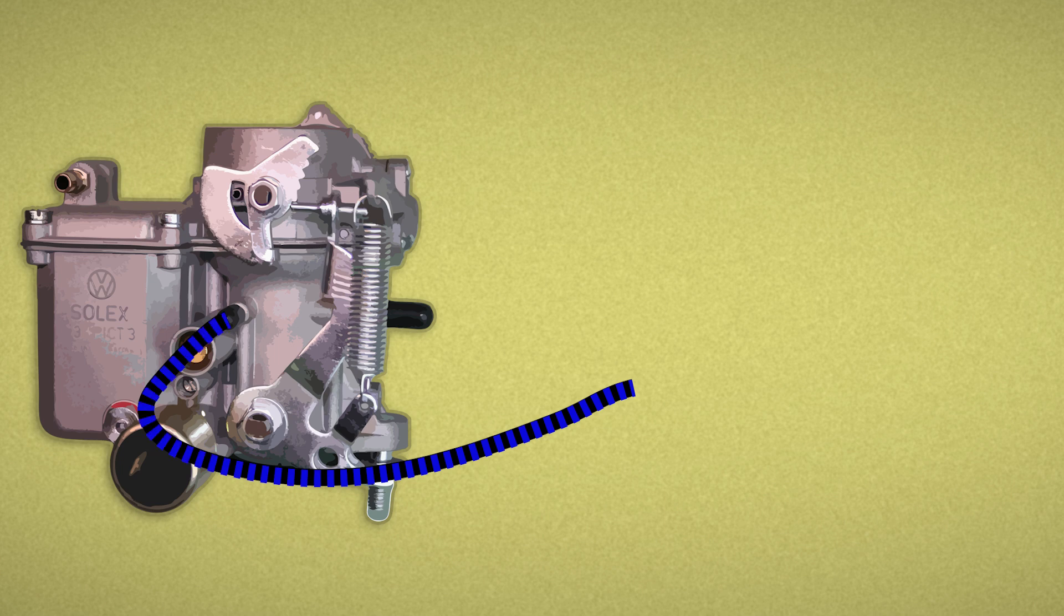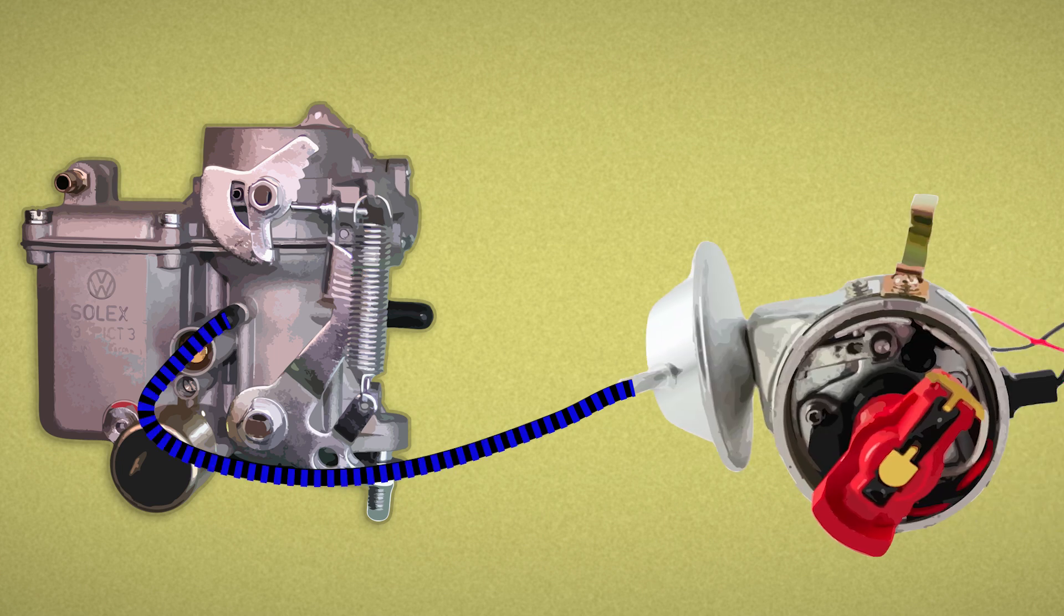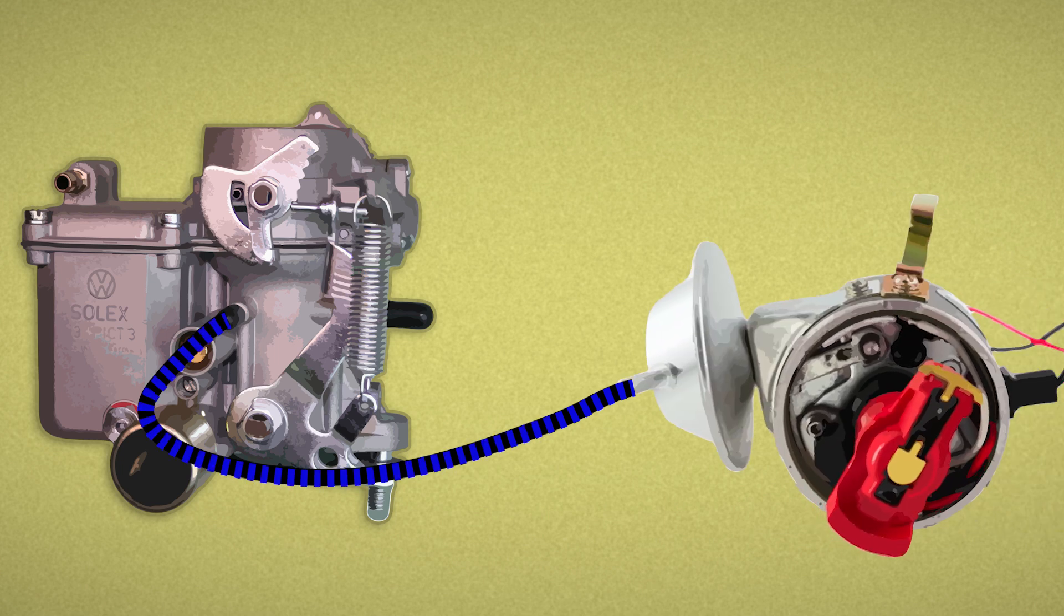That signal travels down the hose and pulls on a diaphragm inside the distributor, advancing the spark. And it does this before your engine speed even catches up.